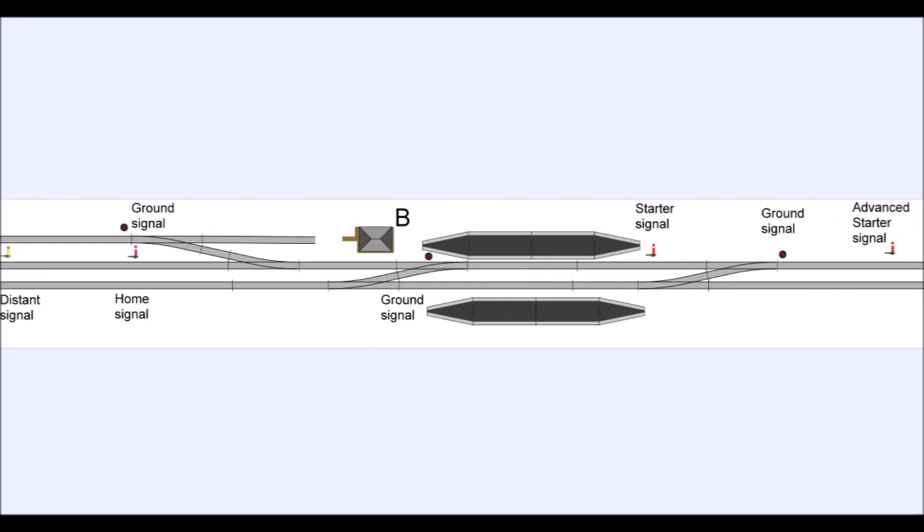Now I'm just going to concentrate on signalman B here, and illustrate something which is much more akin to what we normally have on our layouts, that is, some crossovers and some sidings and all sorts of other stuff. So here's signal box B's diagram. He has a distant signal on the top line. Then he has that home signal, which represents the end of the block section between A and B. Then he has a starter signal at the end of the platform as before. But now we've gained another signal beyond that called the advanced starter signal.